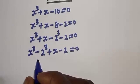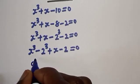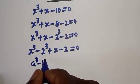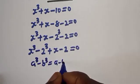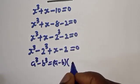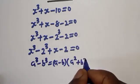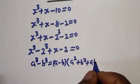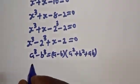Take note of this exponential rule: if you have a raised to power 3 minus b raised to power 3, this is equal to (a minus b) bracket (a squared plus b squared plus ab).